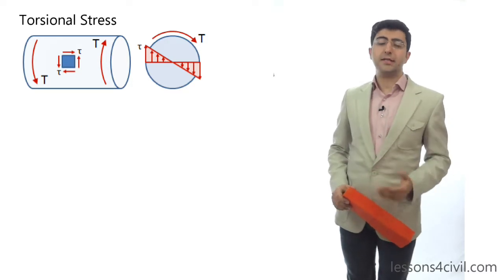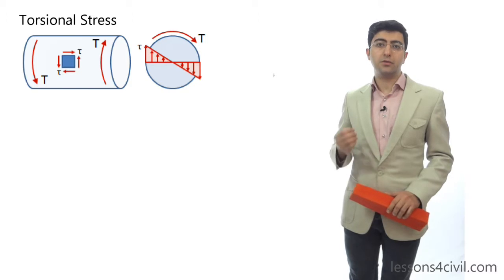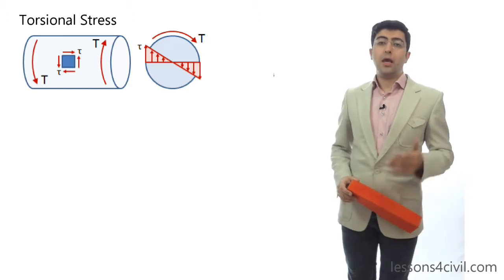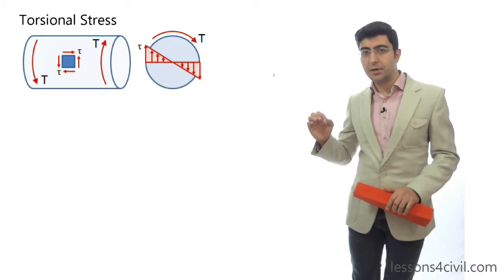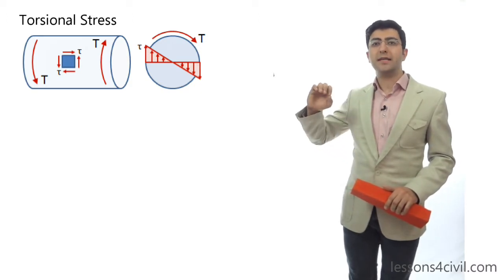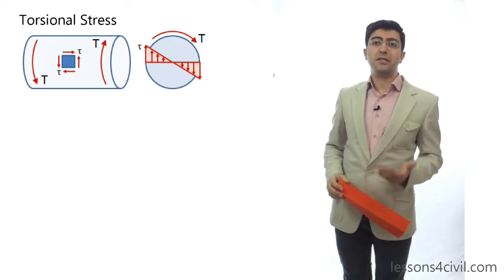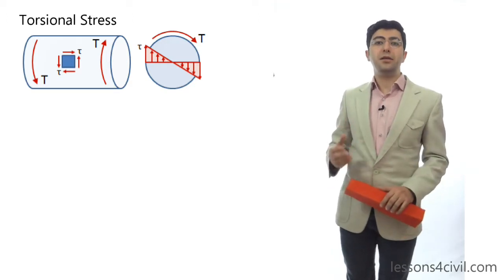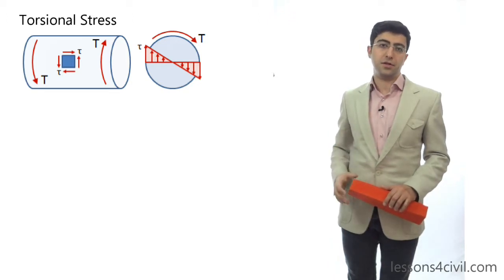As you can see, the points that are closer to the center will experience a lower amount of torsional stress. In other words, torsional stress starts from zero at the center and gets larger as it takes distance from the center. So, if the material remains elastic, we have a linear distribution of torsional stress on any given radius of the circle.